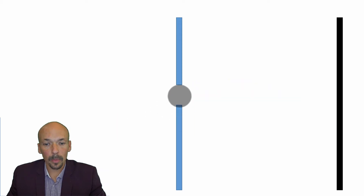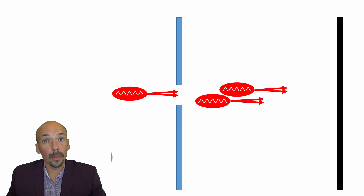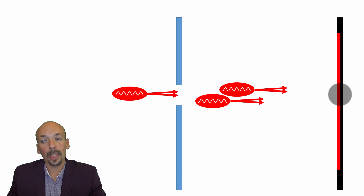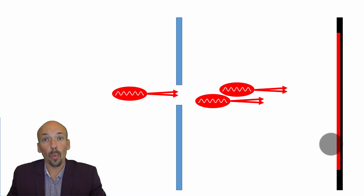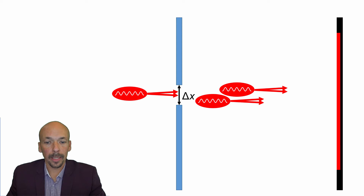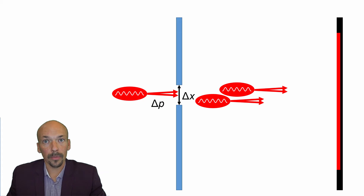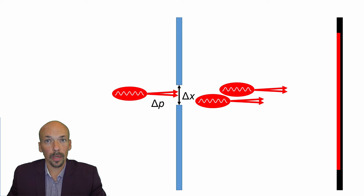Now, if we make it again a little bit smaller, then still a few of them will be able to go through and you would expect the spot to also get smaller. But the smaller this opening gets, at a certain moment this spot will actually become wider — just before the opening closes off completely. And that has to do with the uncertainty principle of Heisenberg. It has to do with the opening, with the uncertainty in position, and with the uncertainty in momentum of these photons.